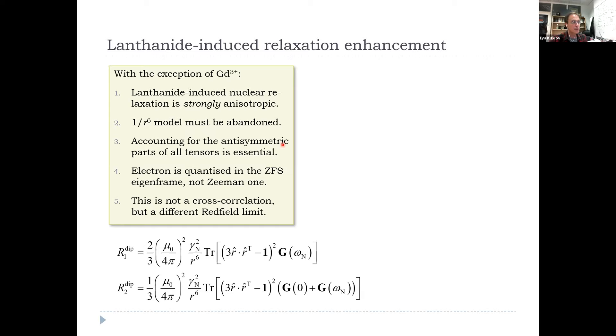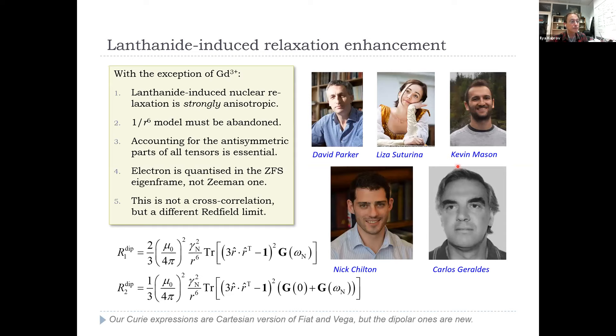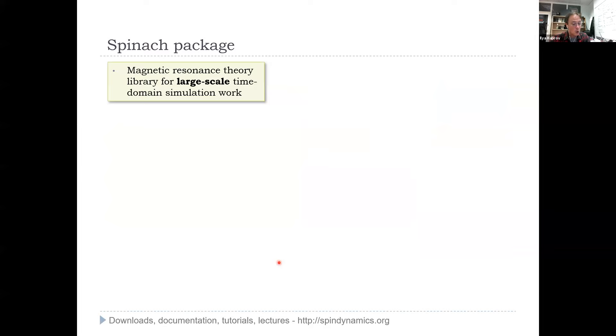Accounting for the antisymmetric, not just anisotropic but also antisymmetric parts of all tensors is essential. You can have 100 ppm antisymmetry there, it can actually dominate your CSA part. The reason for all of that is electron is quantized in the ZFS eigenframe in those systems, not the Zeeman eigenframe. It's not a cross correlation, it's a different Redfield limit. Lisa did all the assignments, David Parker's group synthesized the ligands, Kevin Mason did the NMR, Nick Chilton found an embarrassing mistake before we published it, thank goodness. All the expressions are correct thanks to Nick. Carlos provided some of the ligands that we also tested on. It's a huge three-year team effort, but the final result is quite neat for it.